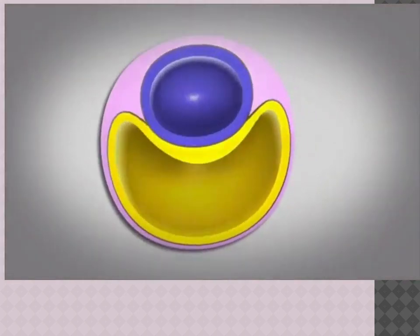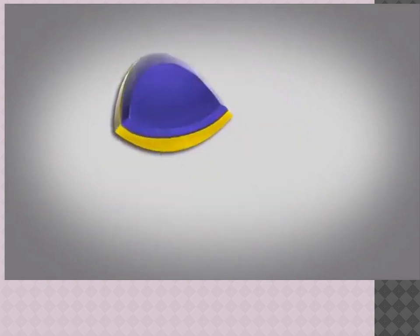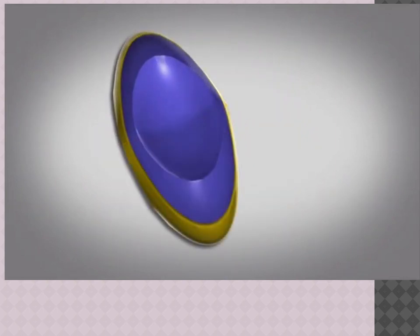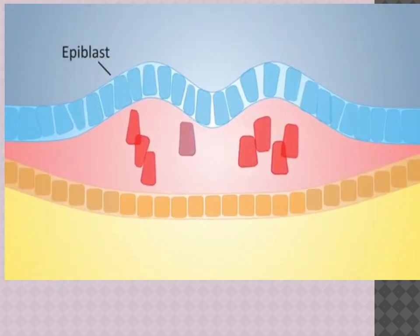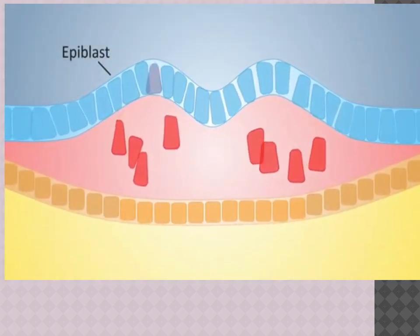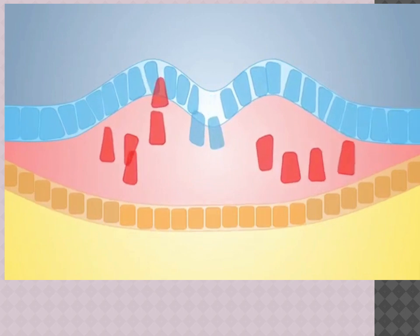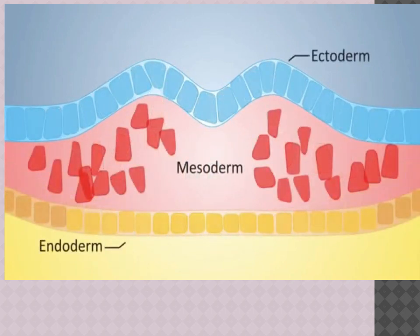Together these layers form an oval-shaped disc-like structure. In the third week, a streak is created on the surface of the epiblast, during which time cells detach and migrate. These migrating cells create three layers — the ectoderm, mesoderm, and endoderm — which contribute cells to form all the tissues and organs in the human body.